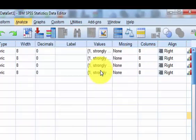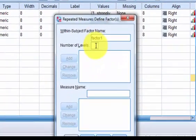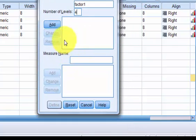General linear model repeated measures. And we have four. And we're going to define them.